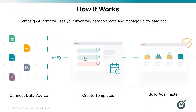So what exactly does Campaign Automator do? It has the ability to create, modify, pause, or enable Google Ads campaigns based on your current inventory feed. This means you can automatically generate new campaigns for new products, update existing campaigns with new product information, and pause campaigns for products that are out of stock.